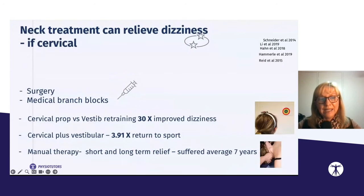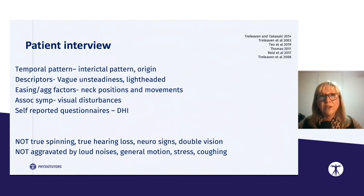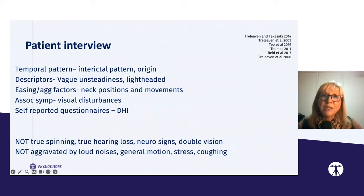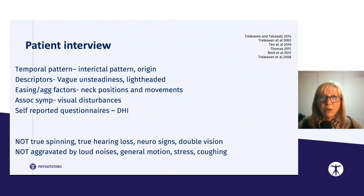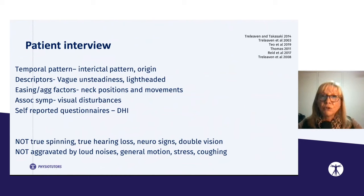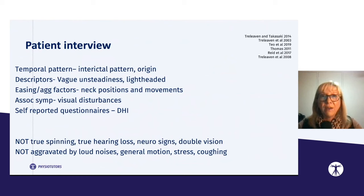When taking a history, establish when the dizziness started and what caused the initial neck problem, to determine whether there has been trauma potentially causing other causes of dizziness simultaneously. Descriptors suggesting cervicogenic dizziness include vague unsteadiness and lightheadedness. Aggravating factors include sustained neck positions and awkward or specific neck movements. Associated symptoms are usually visual disturbances but not true neurological signs. Self-reported questionnaires like the Dizziness Handicap Inventory can help quantify the degree of dizziness.